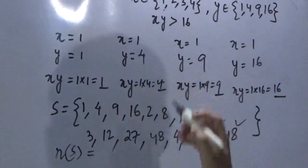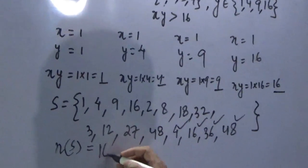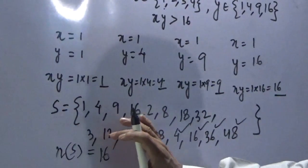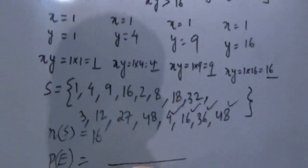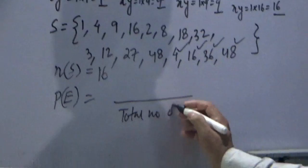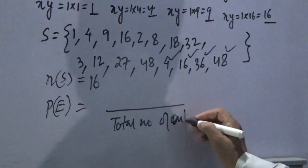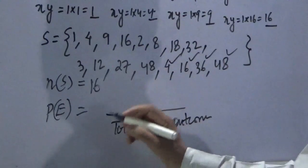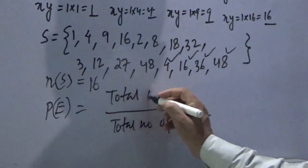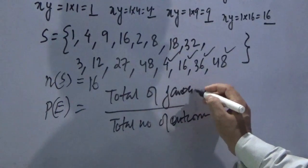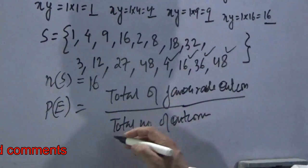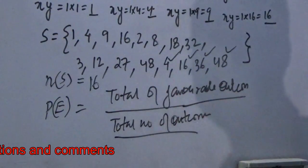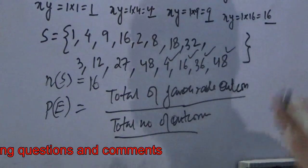So now let's count it. It will give us 4 into 4 which is 16. So we have got one component of the probability, because the formula is total number of outcomes in the denominator and total number of favorable outcomes in the numerator. This 16 will come here in the denominator.